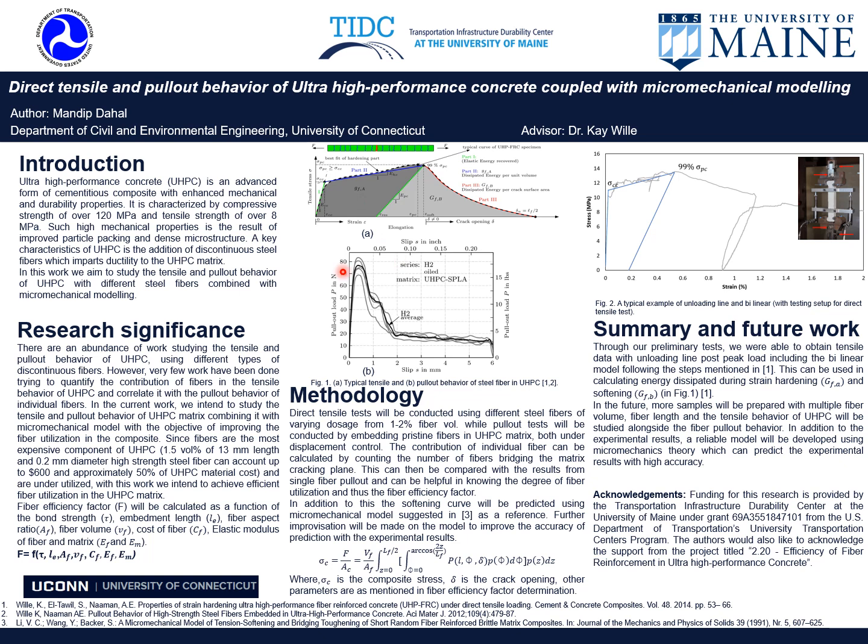Fibers are the most expensive component of UHPC, which can account for up to 50 percent of the total material cost, and they are often underutilized. With the current work, we will explore the fiber efficiency of UHPC using the direct tensile test and pullout test, and then combine those results into a micro-mechanical model.